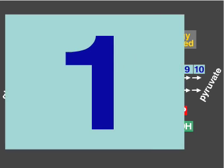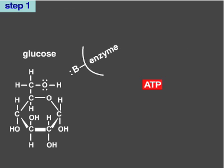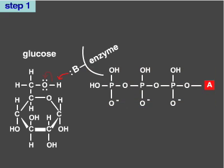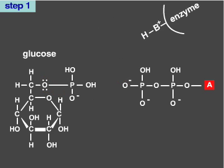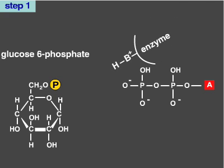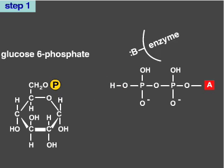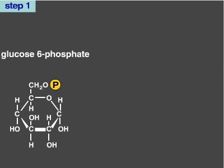In the first step, the enzyme hexokinase uses ATP to phosphorylate glucose. This investment of energy primes glucose for energy-releasing reactions later in glycolysis. The resulting molecule is glucose-6-phosphate. ADP is released. This first step of glycolysis is irreversible.